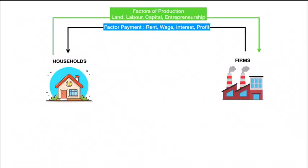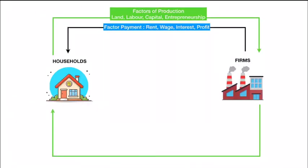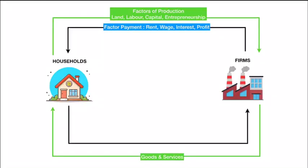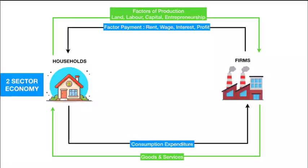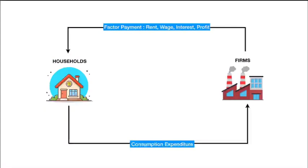So, the household provides factors of production, and in exchange the firms pay factor payment. On the other hand, the products that firms produce are required by the household for living — like food, clothes, furniture, etc. And to buy these products, the household pays money, or what we call consumption expenditure. This is the simplest form of economy, which we call a two-sector economy, as there are only two sectors: the household sector and the business sector or firms. And this way, money or income flows between these two sectors indefinitely.